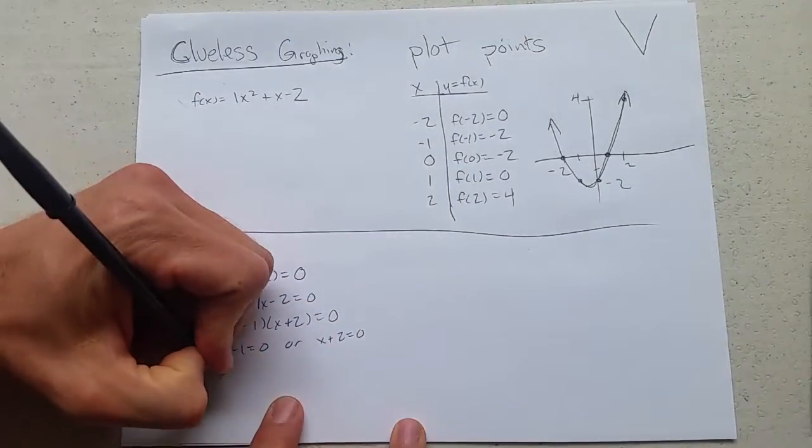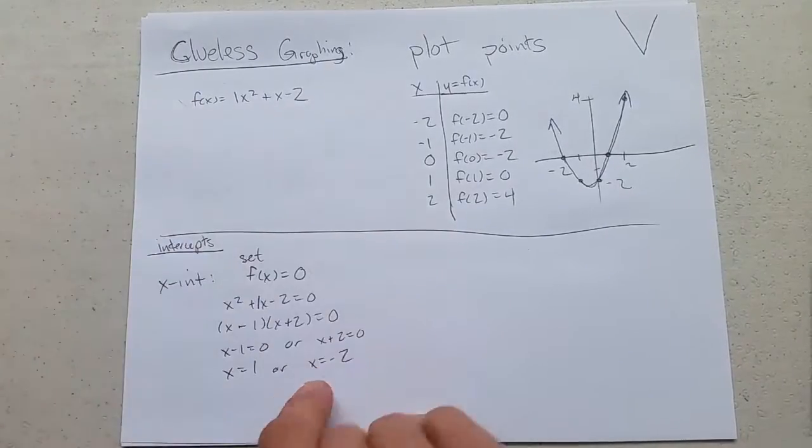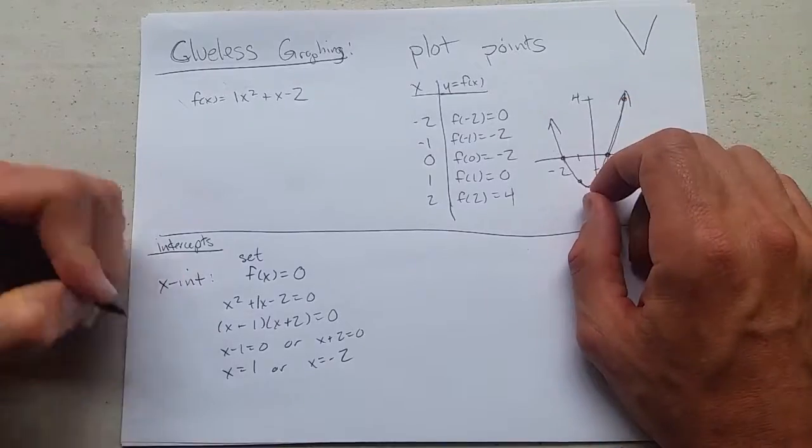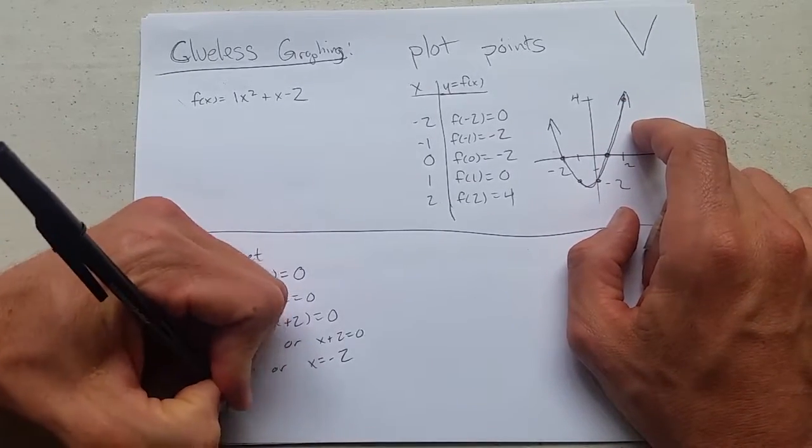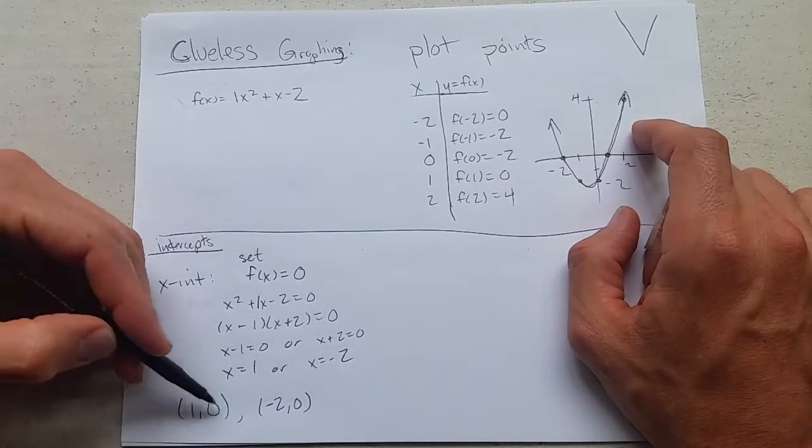Now for x intercepts, let's write them as points - that's how they appear on the graph. And they're going to appear as (1, 0), (negative 2, 0). So there's our x intercepts.